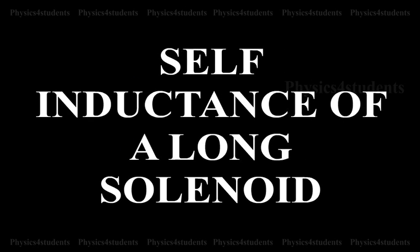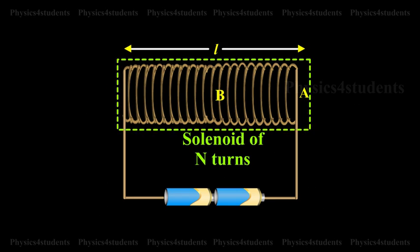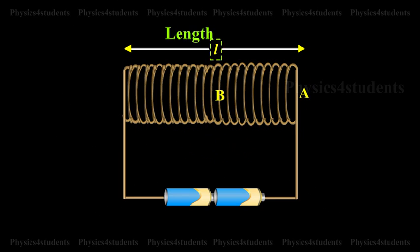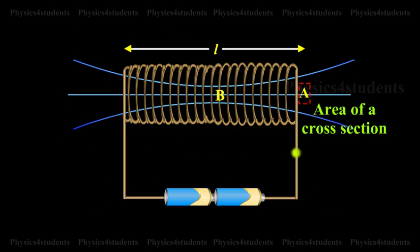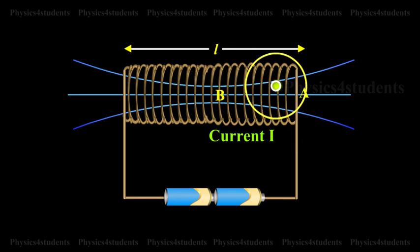Self-inductance of a long solenoid. Let us consider a solenoid of N turns with length L and area of cross-section A. It carries a current I.